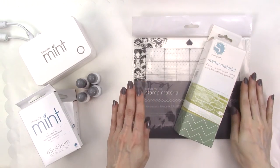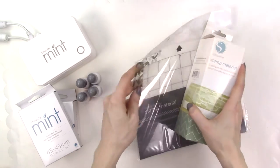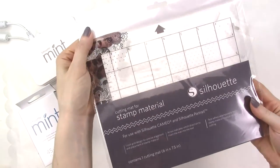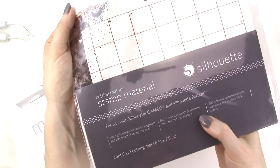To make stamps with the Silhouette stamp material, you don't need to purchase a special machine if you already have the Silhouette Cameo or Silhouette Portrait. I'm assuming that you can cut the material with a Silhouette Curio too though I haven't confirmed that.